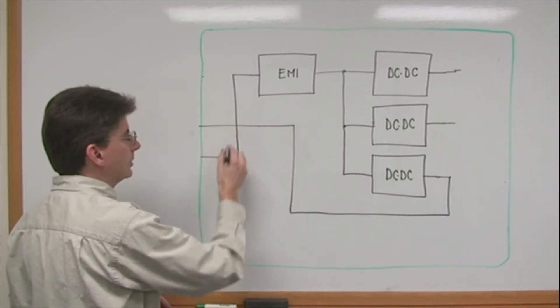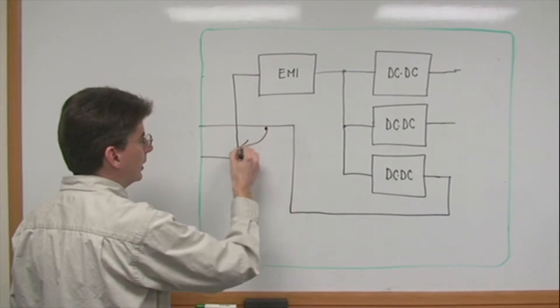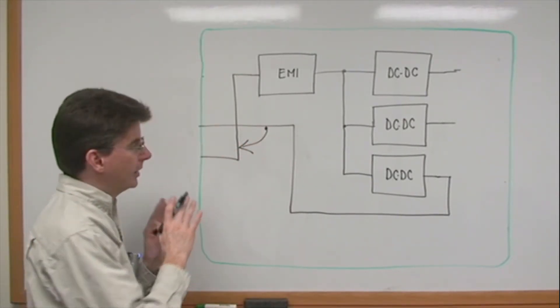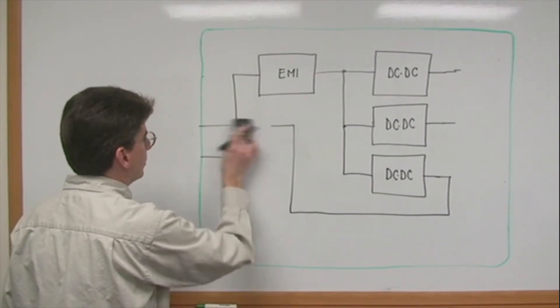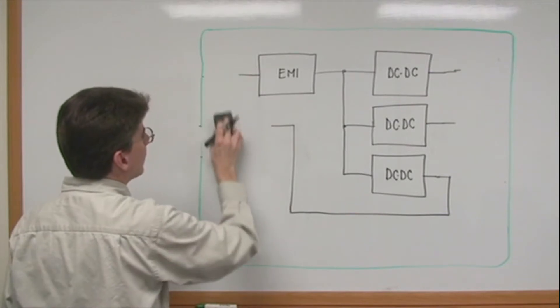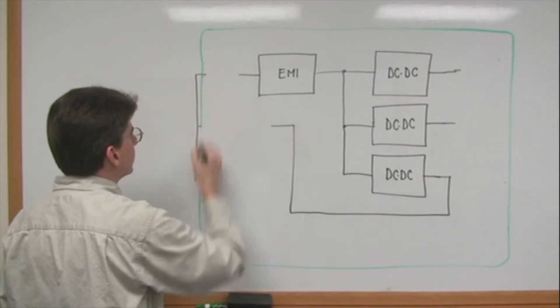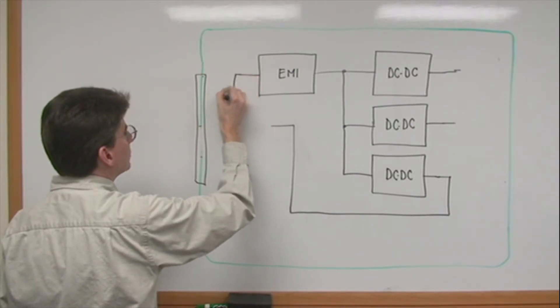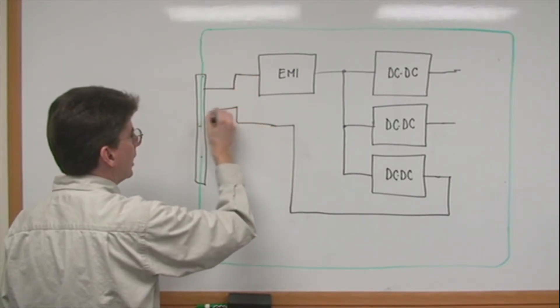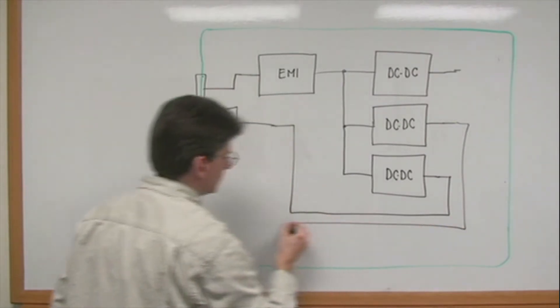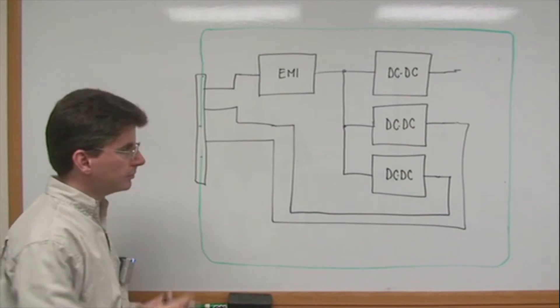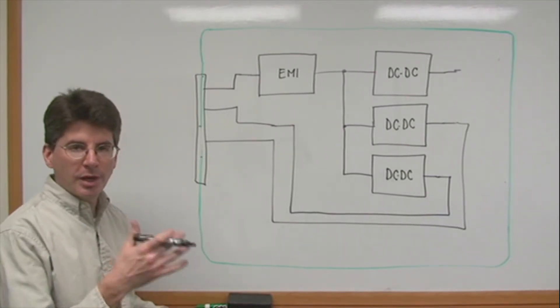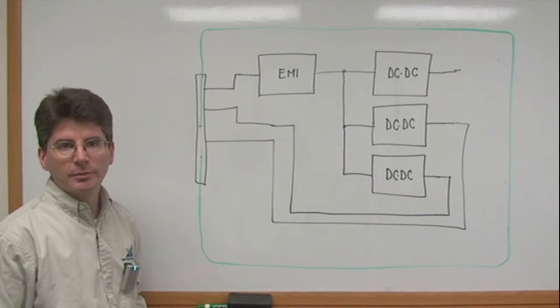This will result in a lot of noise coupling from this output back to the input and you'll have an EMI problem if you do something like this. You want to keep the inputs and outputs separate. You can get them on the same input connector. That's usually not a problem. Just don't overlap and you'll be okay. Just maintain some separation. And that's the best way to avoid EMI problems when you get into your board layout. Now let's go to the lab and take a look at some of this on the bench.